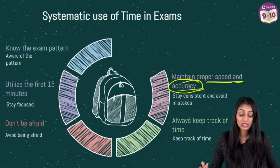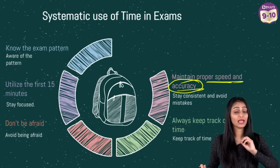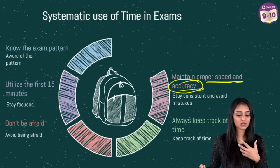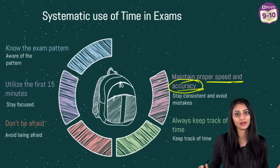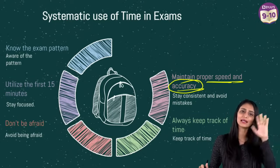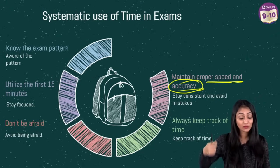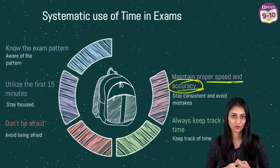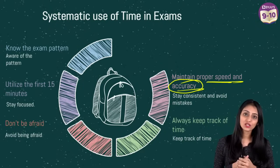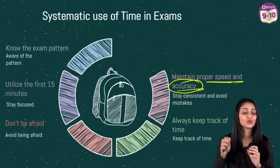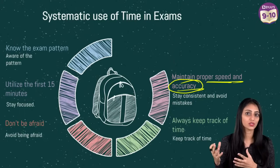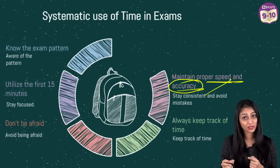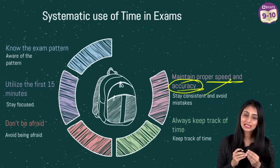Talking about accuracy — accuracy is very important in math. When solving any question, make sure you give the proper final answer along with the units. Many students write the final answer but never write the units, thinking they'll add it in the exam — please don't do that, get into the habit of always writing units. For calculative chapters like surface areas and volumes and statistics, there are tricks I've given you — please watch those sessions. When doing rough calculations, use the last page of your answer sheet and keep it neat and clean so you can read your own handwriting.